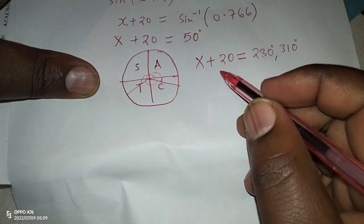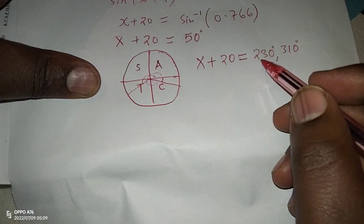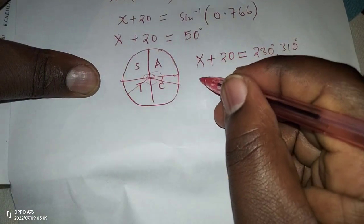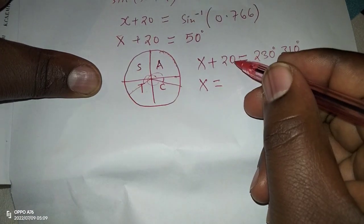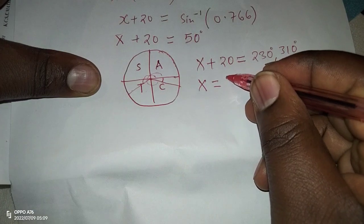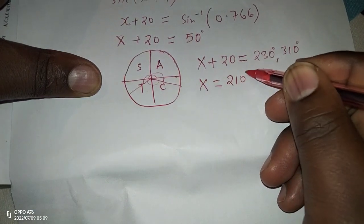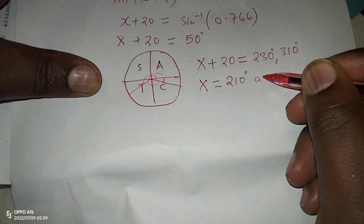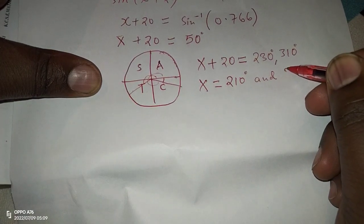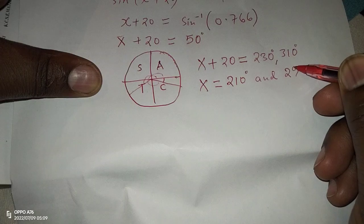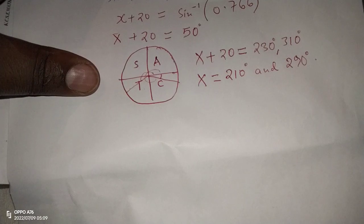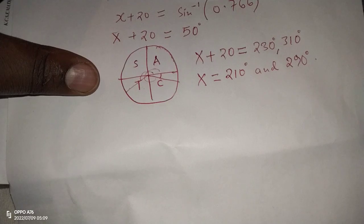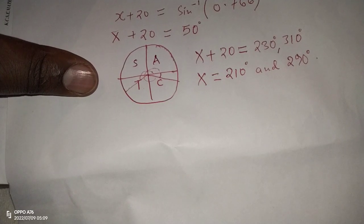So which means if x plus 20 equals to 230 and 310, then it means to remain with x, we're going to subtract 20 from the other side, such that the angle will be 210 and 290. So in case we go another cycle, then we are going to be outside the range which we've been given, which is 0 to 360. So these are the only two angles.